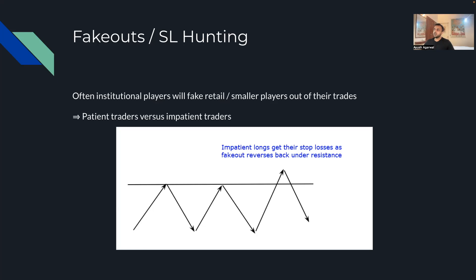Fakeouts or stop-loss hunting is a very common occurrence. Generally there are clear levels, but it looks like price is trying to break out. It just takes out all the orders beyond the level and then falls back within the range — under that resistance or above that support. This is why breakouts and breakdowns often fail. I would say there is more than a 50% chance they will be faked out. Success rate on breakouts is very low, but that's for another video.